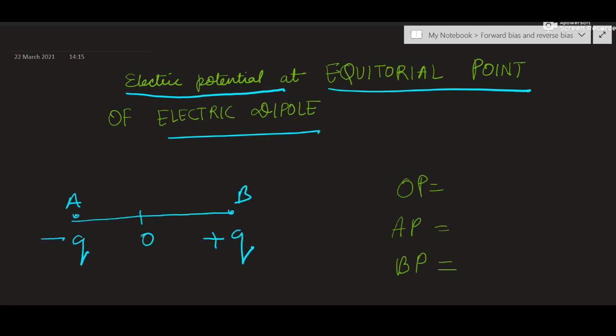This is midpoint of the dipole, O. Half distance is A. Another half is also A. And this is the equatorial point P. The distance between O and P is R. You can write OP as R or X as per your comfort. I have taken it R.